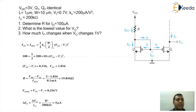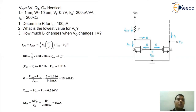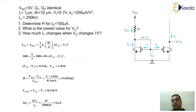The questions are: first, determine R for IO = 100 µA; second, what is the lowest value for output VO; third, how much does IO change when VO changes by 1V.